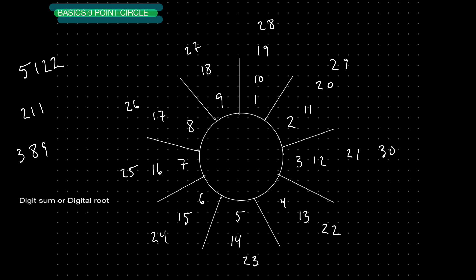And where that number lands is what's going to be called the digit sum or the digital root. We find the digit sum or the digital root by simply adding the numbers together. So for example, let's look at this number 21. If I take 21 and add 2 plus 1, that takes me back to 3. So you can see it takes me right back to the root, the digital root.